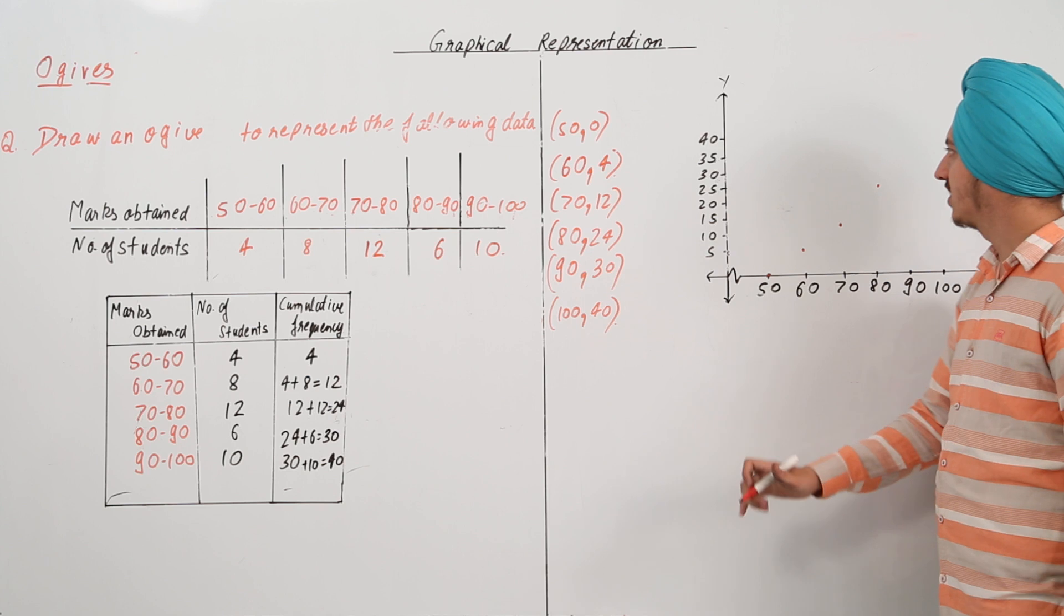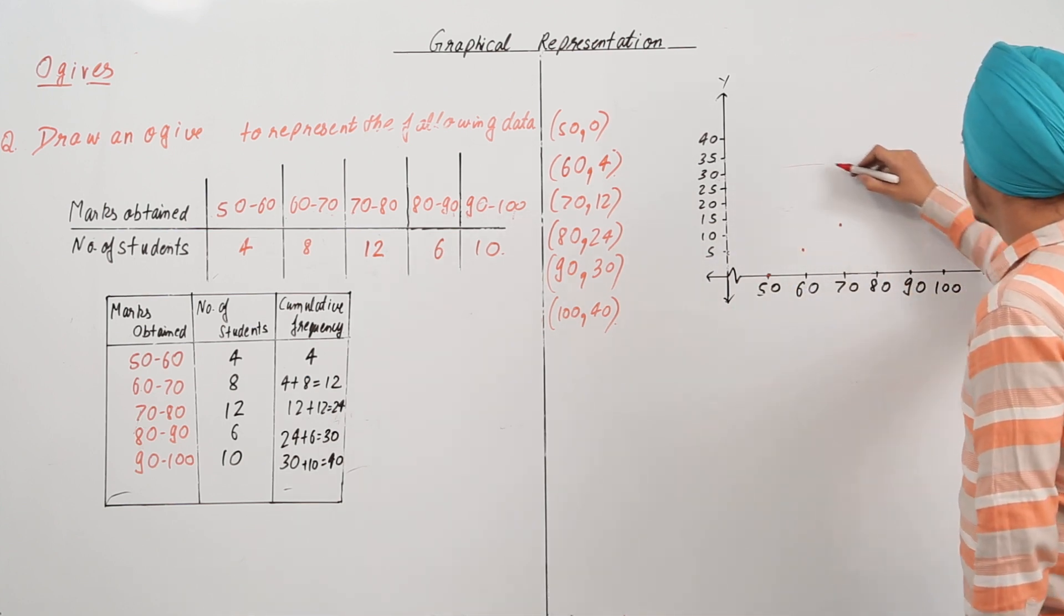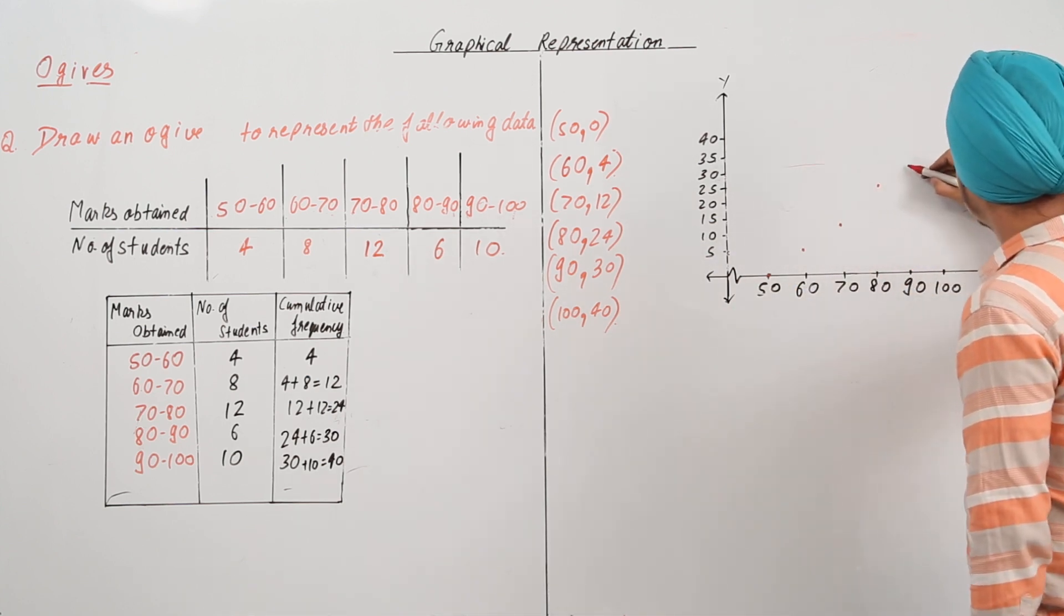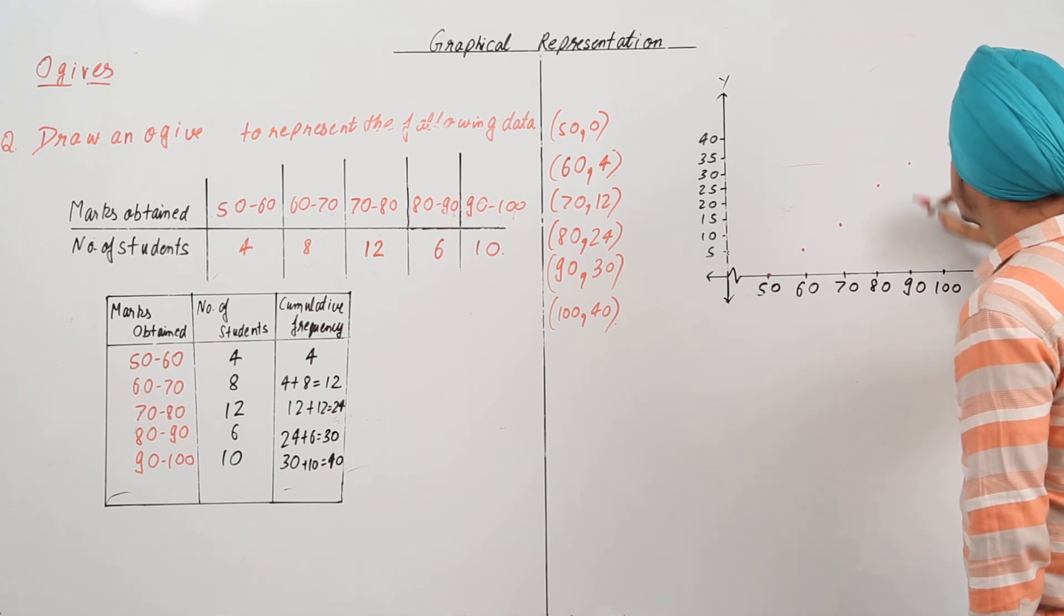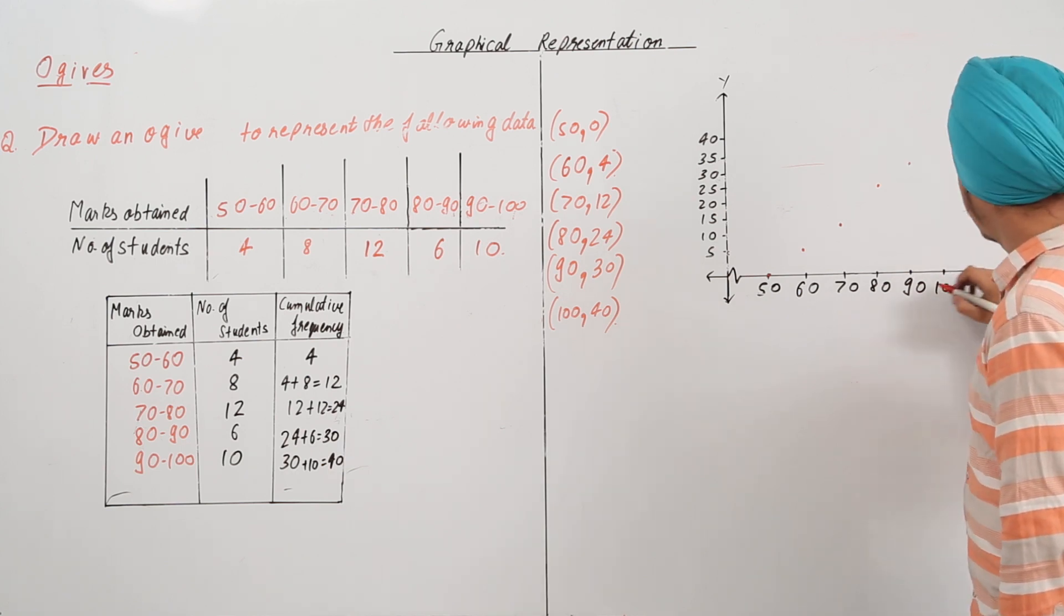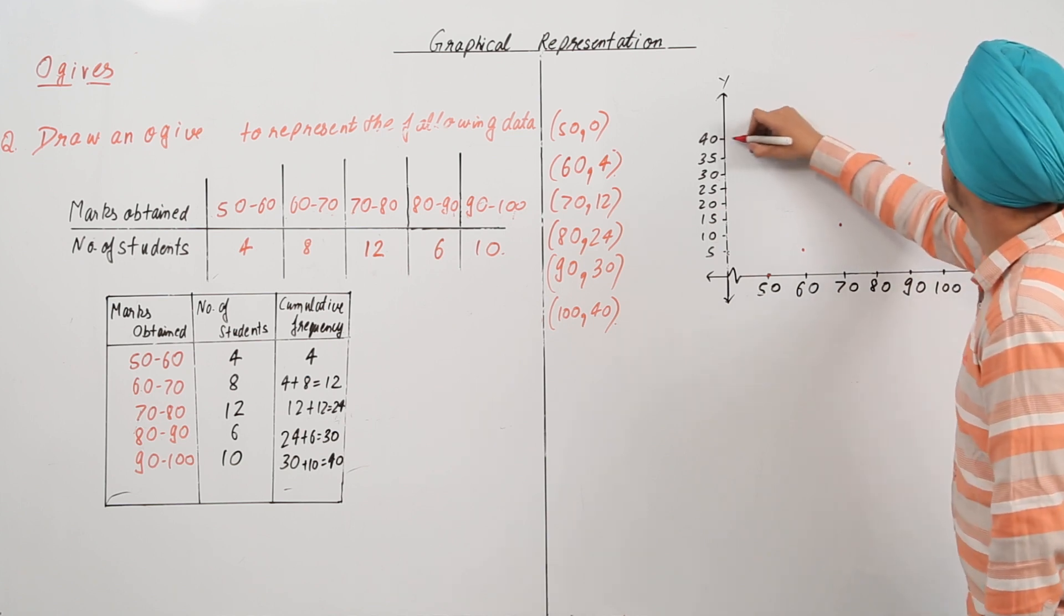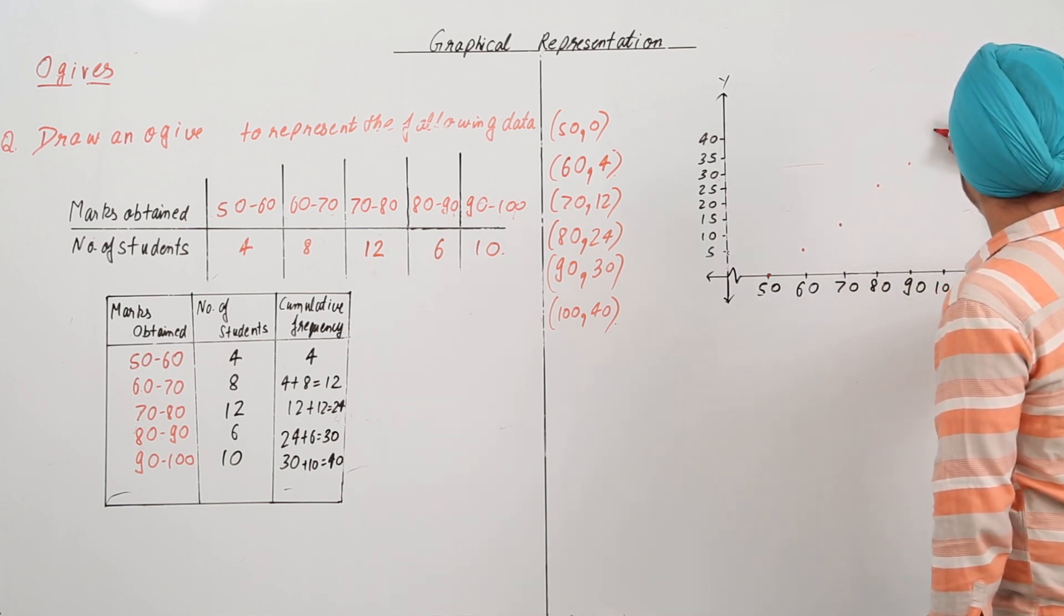Next, we have 90, 30. So, we have this is 30 and this is 90 over here. And we have 100, 40 somewhere over here.